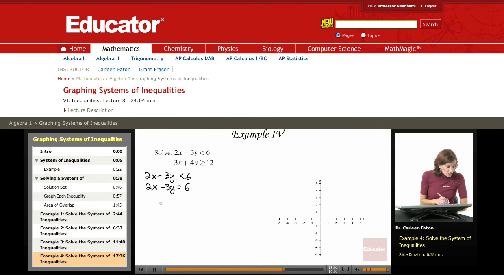My corresponding equation is 2x minus 3y equals 6. Putting that in slope-intercept form gives me negative 3y equals negative 2x plus 6. Divide both sides by negative 3 gives me 2 thirds x minus 2.